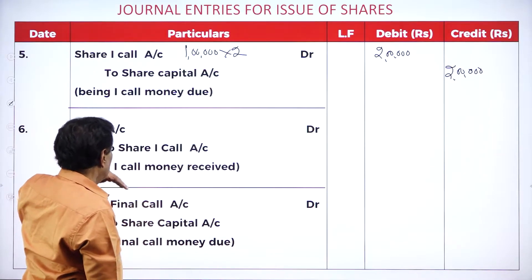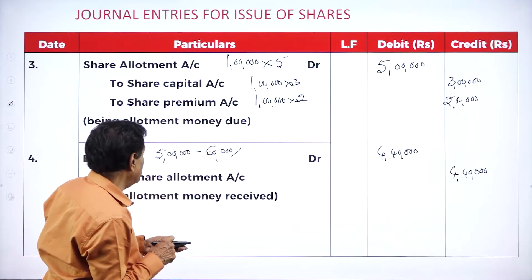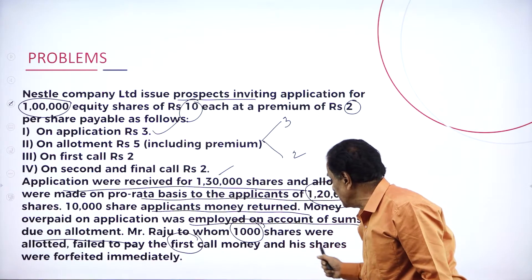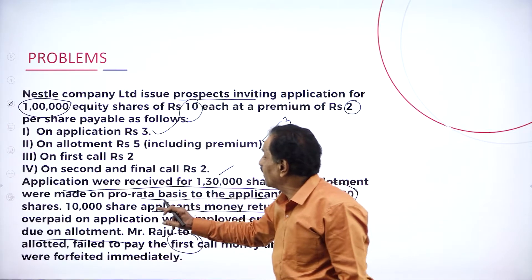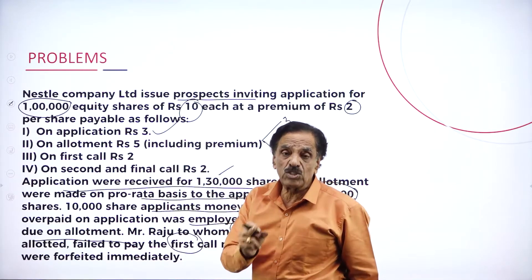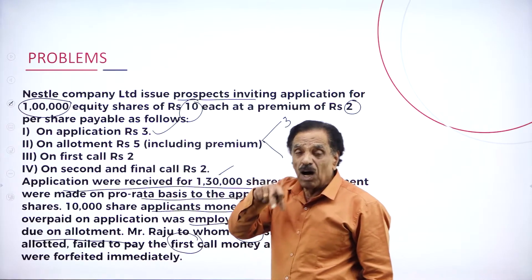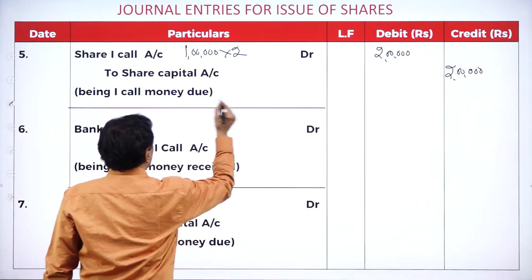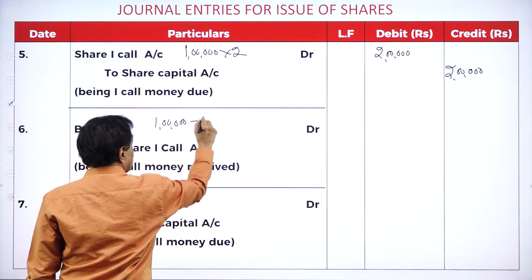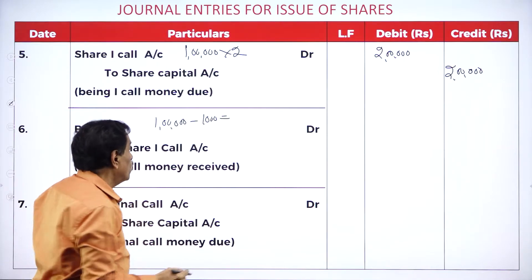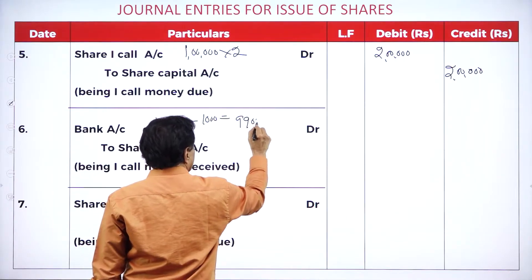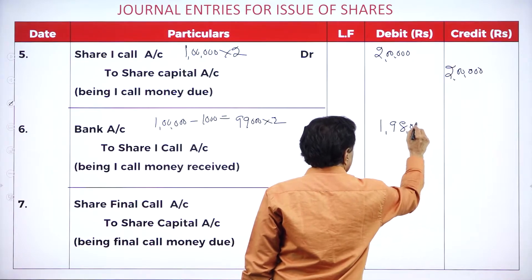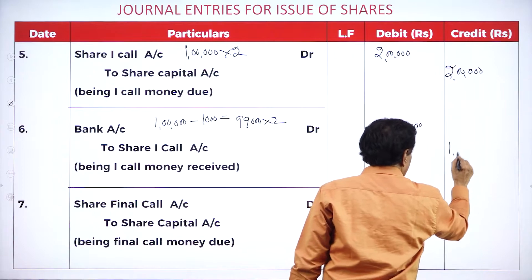For first call, you call for 1 lakh into 2 = 2 lakh. How many shares money you could not receive? 1,000. So you are going to receive 99,000 shares' money at rupees 2 = 1,98,000. Bank account debit 1,98,000 to share first call account 1,98,000.